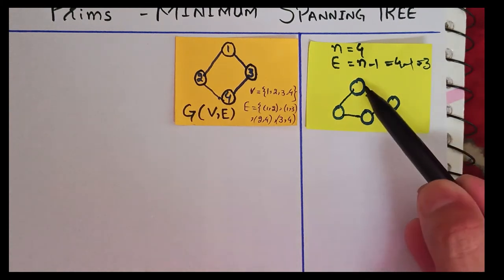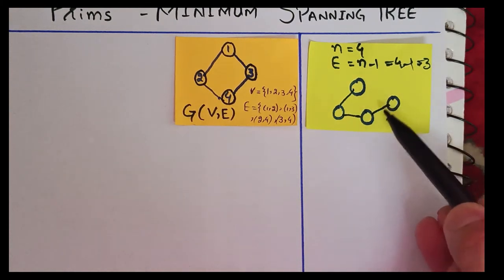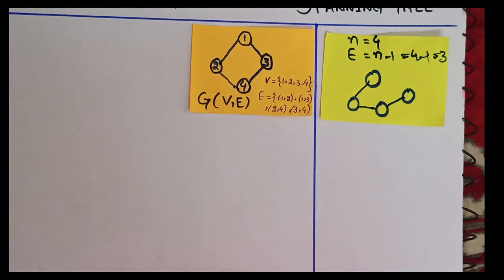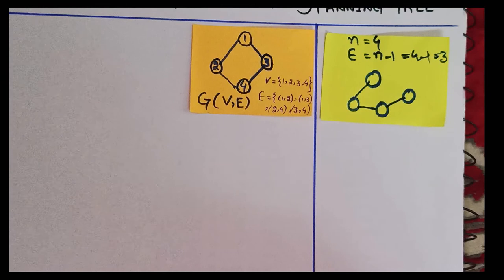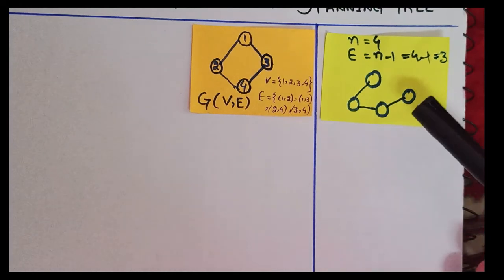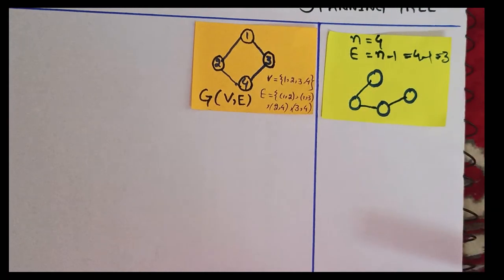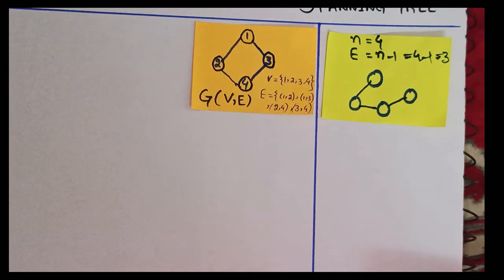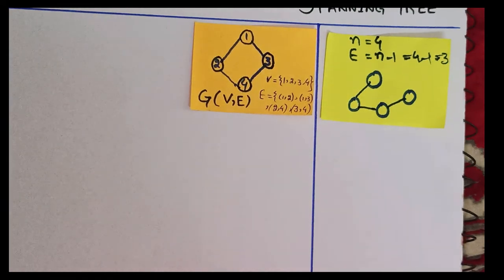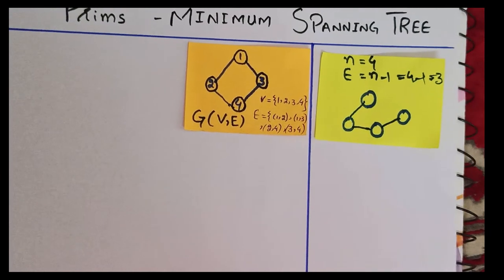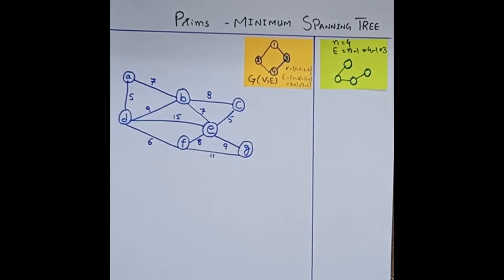If I connect differently, this is also a valid spanning tree. This spanning tree does not have a cycle, and this spanning tree cannot be disconnected. If I separate a node and don't connect it to the others, then this is not a spanning tree. So the properties of a spanning tree are: it does not have a cycle, and it cannot be disconnected. While creating the spanning tree of a graph, these points should be kept in mind.